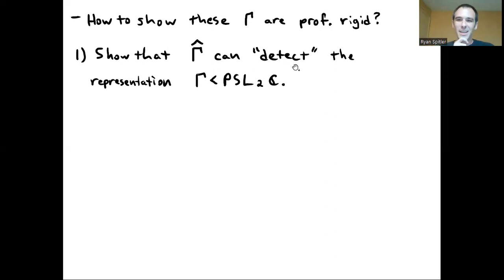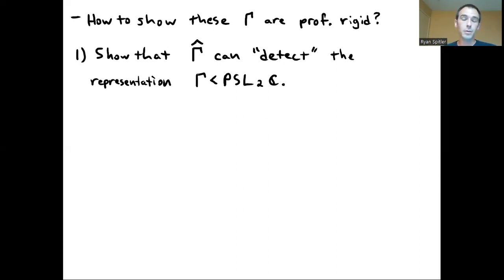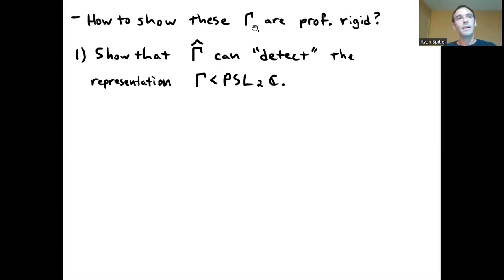The detection is in scare quotes because it's a rough detection in general, and it's only for these very special examples where it really almost detects the representation exactly. For these particular examples, we need to make a lot of strong assumptions on the groups. Essentially the only representations these groups have into PSL₂C is the discrete faithful one — up to conjugation or a Galois automorphism of the number field. Also these groups are arithmetic, with very constrained arithmetic information.